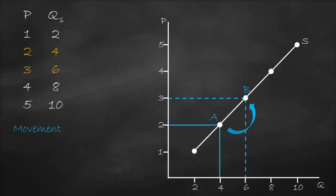That's why we call it a movement. What we mean by a movement is: I move from one point to another on the same supply curve. Here we moved from point A to point B. So when will we have a movement? When we have a change in price. This change in price results in moving from point A to point B on the same supply curve. Each point on a supply curve is called quantity supplied, so this means that here we have a change in quantity supplied.